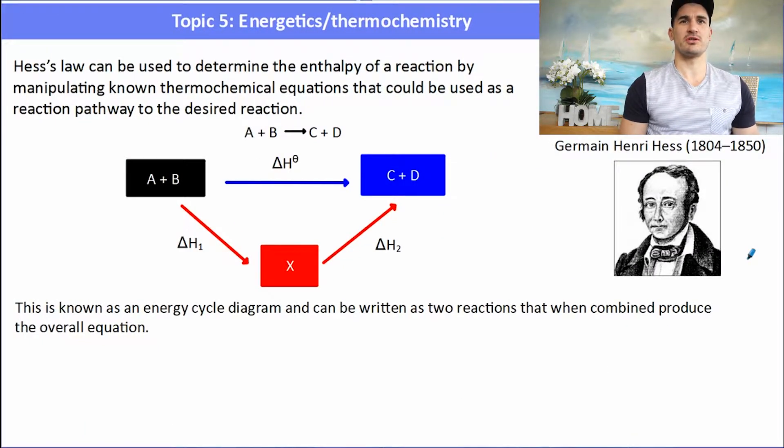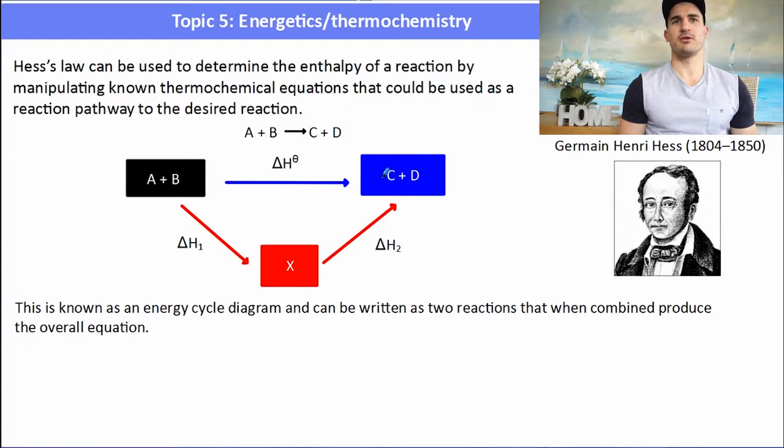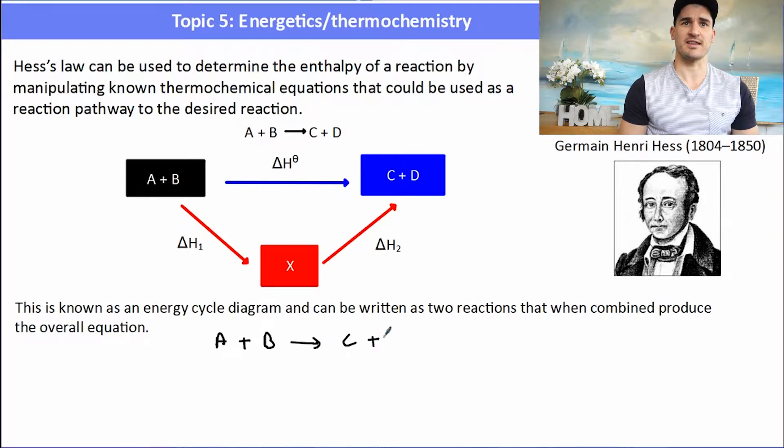So Hess's law was used to determine the enthalpy of a reaction by manipulating thermochemical equations that could be used to come up with the desired reaction pathway. So in a reaction pathway we might have A plus B that goes to C plus D and that has a certain delta H. But there's also another alternative pathway. A plus B could turn into X and then X could turn into C plus D. And the overall enthalpy would actually be the enthalpy of both of those steps added together.